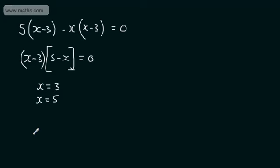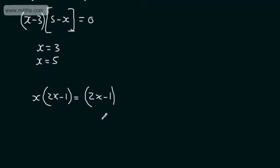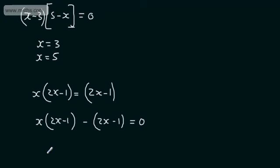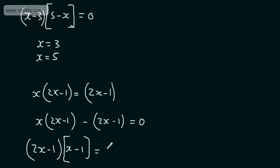For x(2x - 1) = 2x - 1, don't divide both sides by (2x - 1) — that loses a solution. Rearrange: x(2x - 1) - (2x - 1) = 0. Factor out (2x - 1): (2x - 1)(x - 1) = 0. So x = 1/2 or x = 1. Be careful not to lose solutions by dividing by a variable expression.